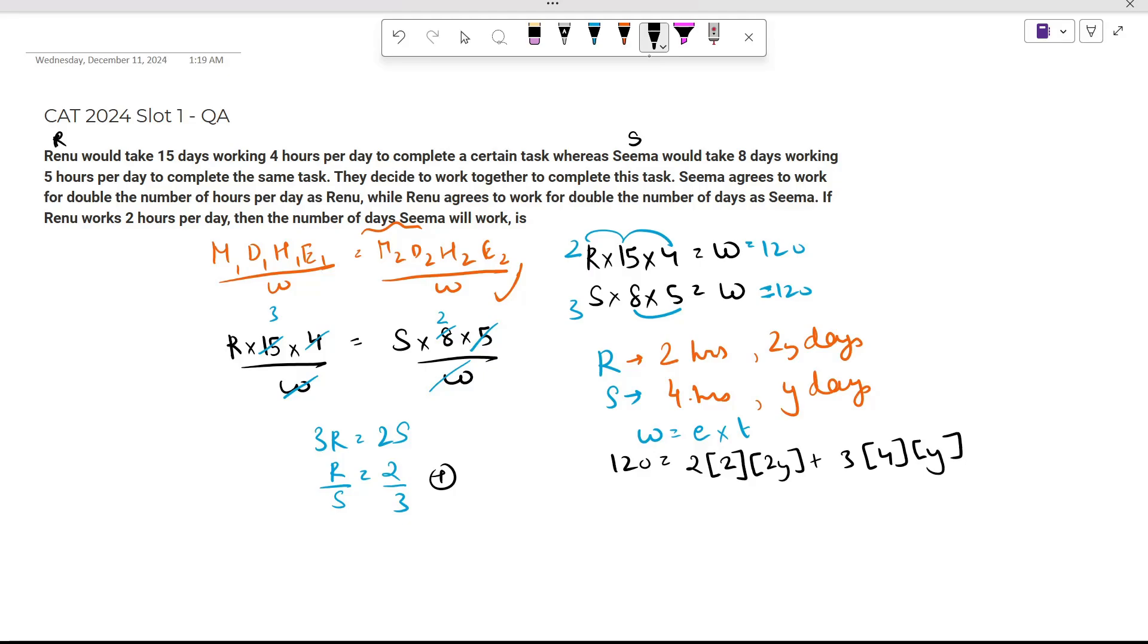Now we'll solve the equation and get the value of y. This is 120 equals 8y plus 12y, which comes out to be 20y. So y comes out to be 6. We need to calculate the number of days Sima will work. Sima works for y days, and the value of y is 6. So the answer for this question is 6 days.